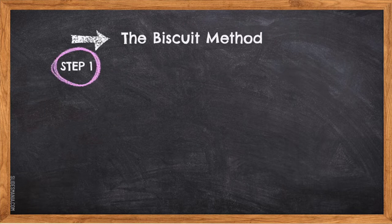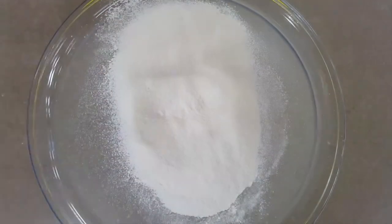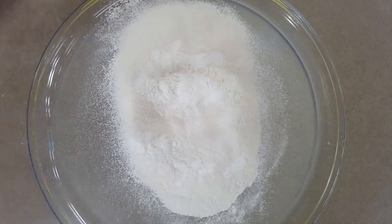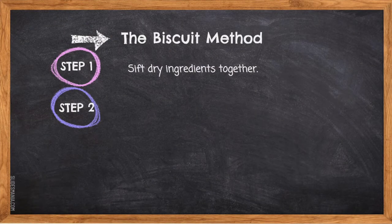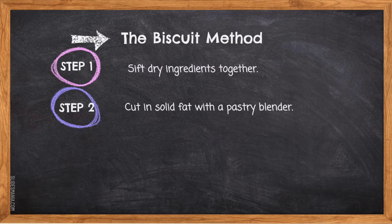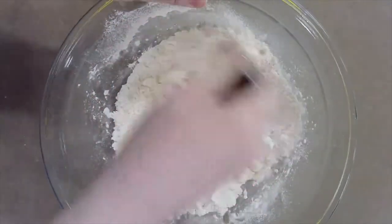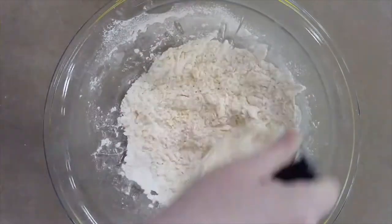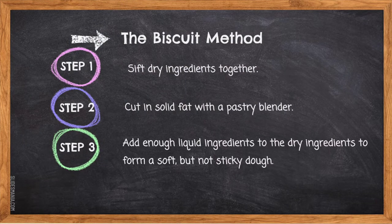Step 1: Sift dry ingredients together. Step 2: Cut in solid fat with a pastry blender. Step 3: Add enough liquid ingredients to the dry ingredients to form a soft but not sticky dough.